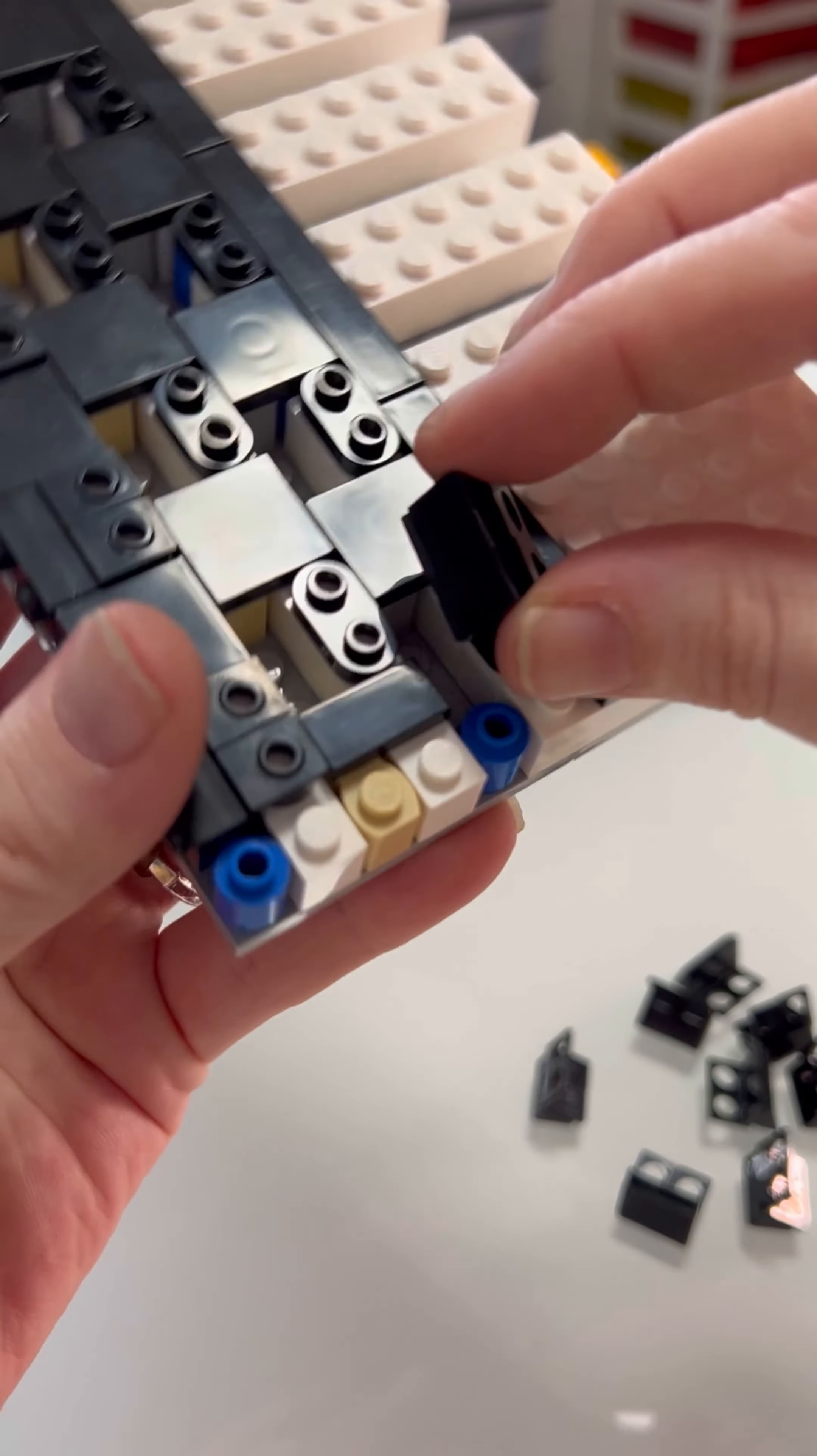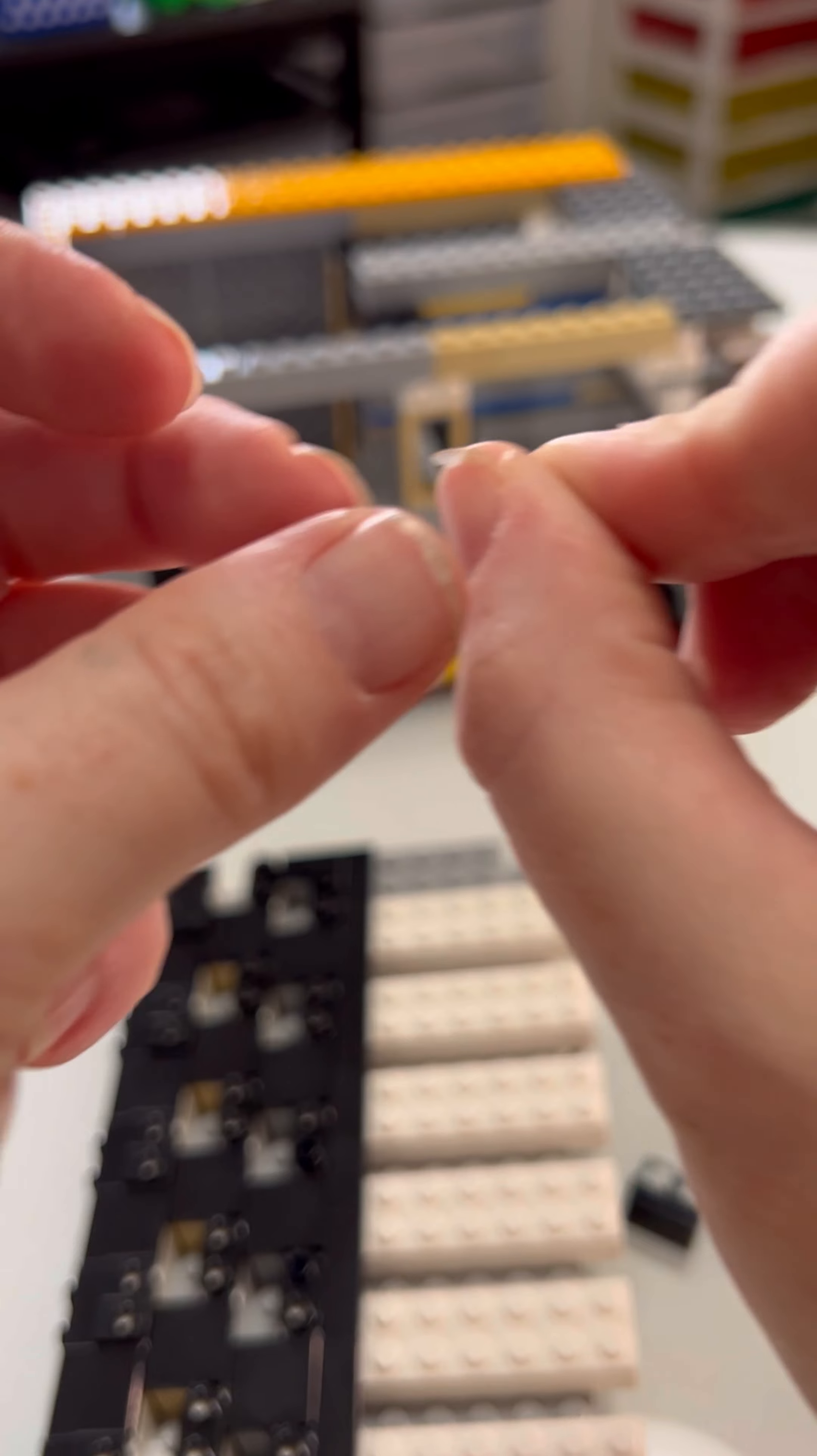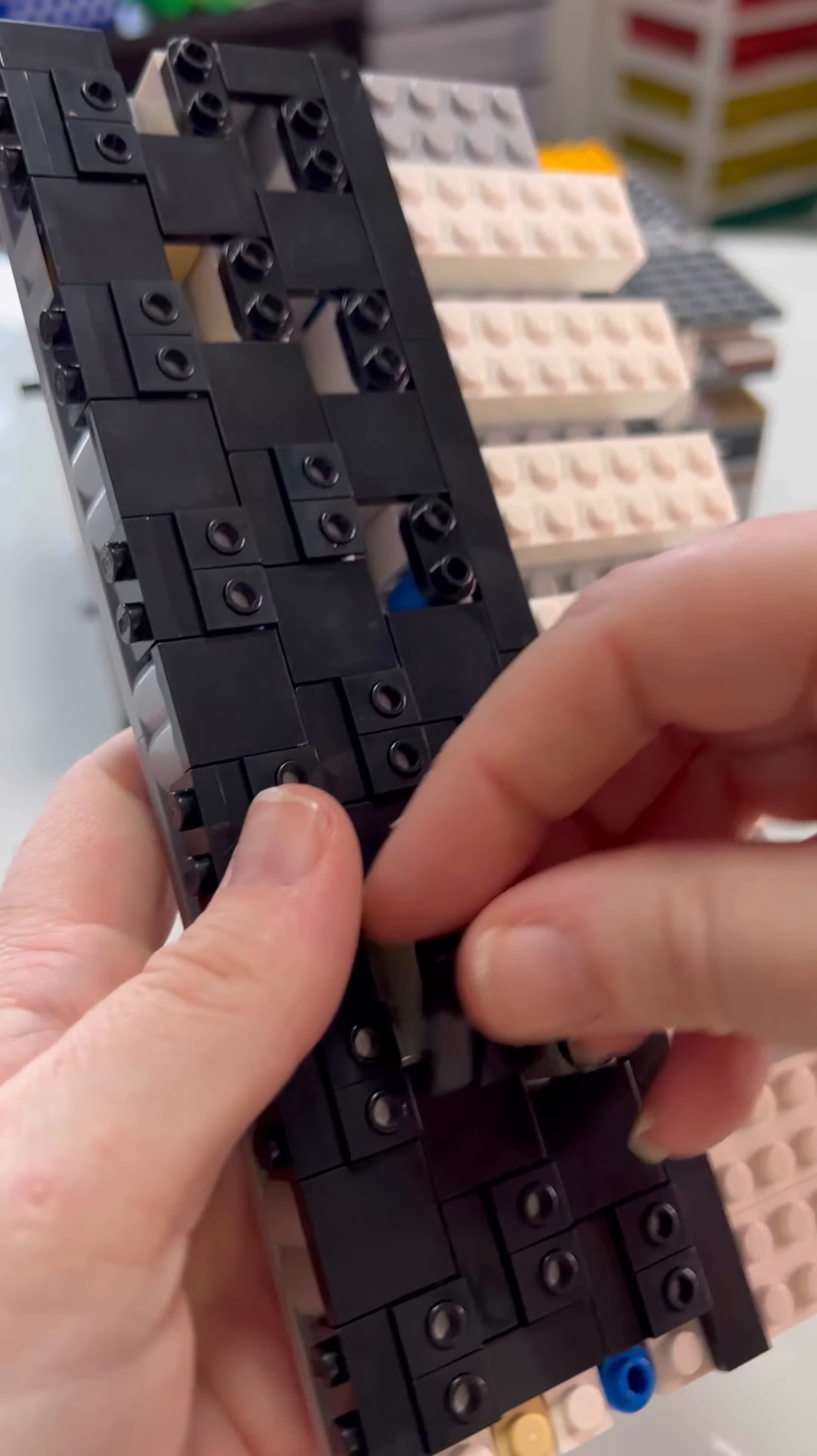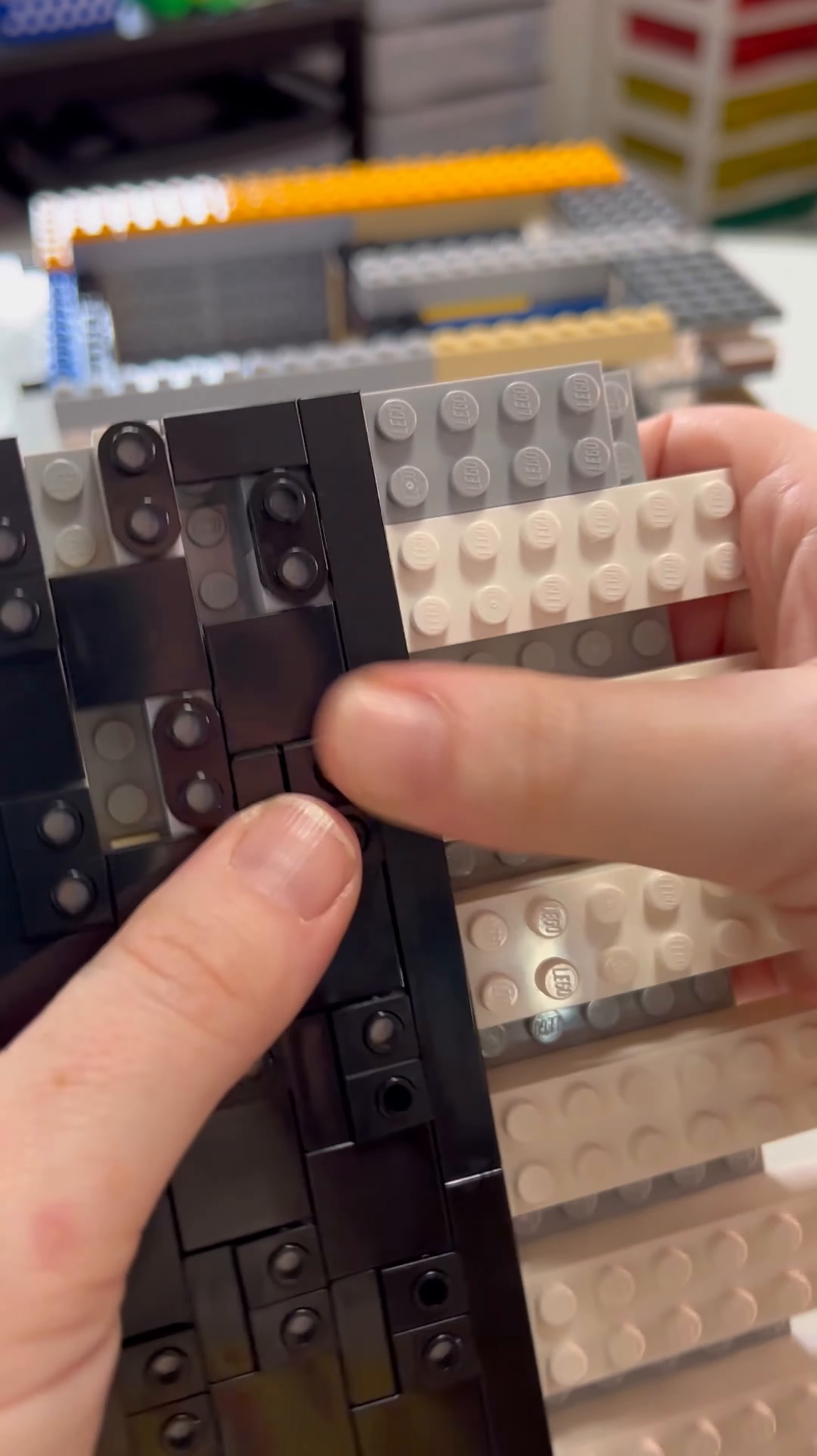And now we got to fill all these holes. Which means we use the slopey pieces. Slopey pieces with the holes at the higher end and we need 12 of these. There we go.